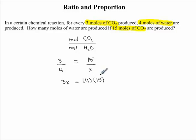So 4 times 15 will just give us 60. So I'm going to rewrite this: 3X is equal to 60.